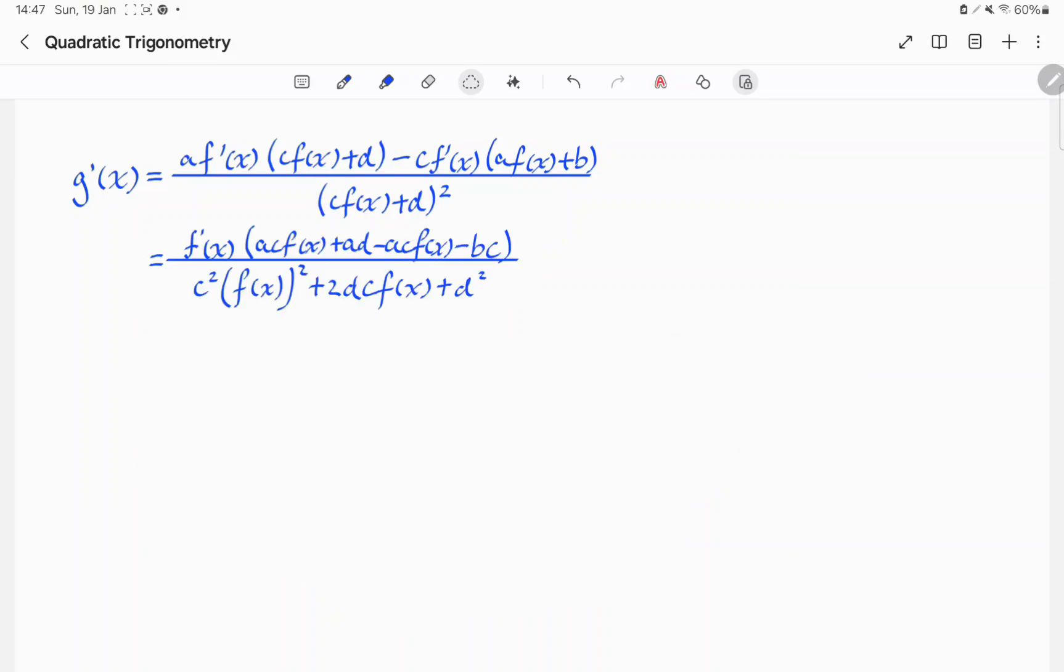Here, the numerator should simplify down to f primed of x of a c f of x plus a d, minus a c f of x minus b c. And that simplifies to f primed of x, multiplied by k, where k is equal to a d minus b c, which is not equal to 0, as defined in the question.